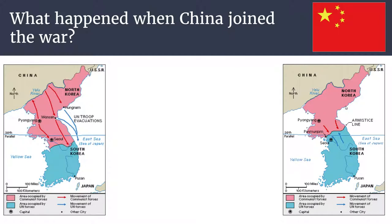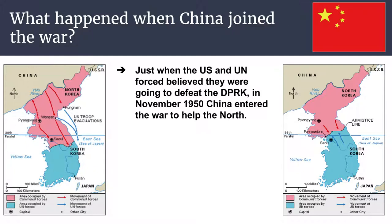Then China joined the war. China recognized that US and UN forces were right on its doorstep, and without much communication, China simply got involved. Just when the US and UN forces believed they were going to defeat the DPRK, in November 1950 — only months after the war started in June — China entered the war to help the North, sending thousands and thousands of troops into North Korea. Now a major power had stepped directly into the game, unlike the Russians who had backed North Korea without sending actual troops.